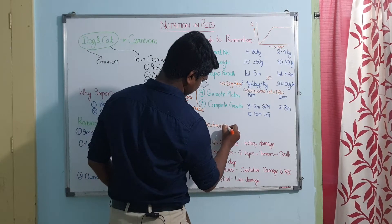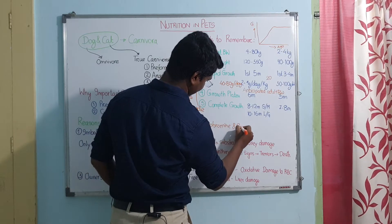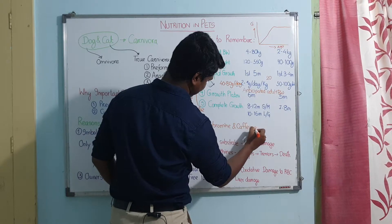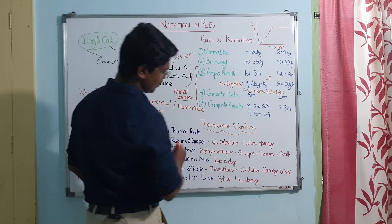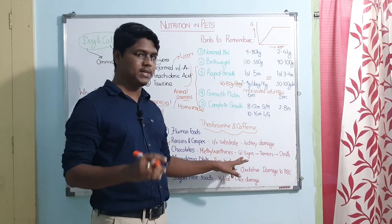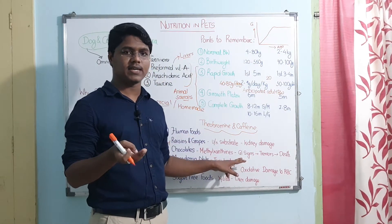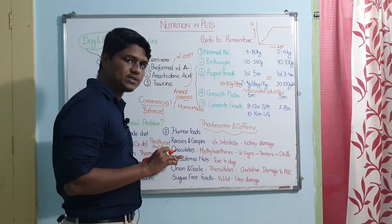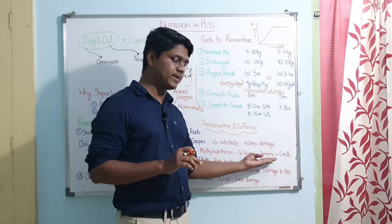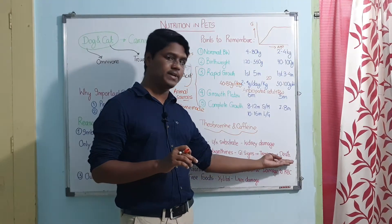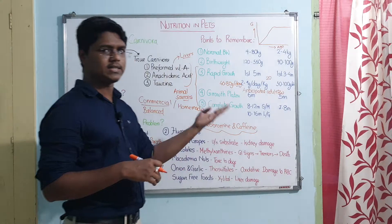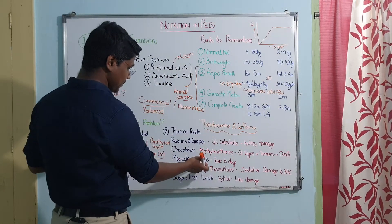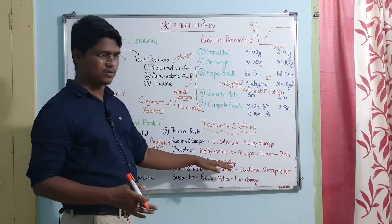Theobromine and caffeine are the methylxanthines present in chocolate. Initially there will be gastrointestinal signs like diarrhea or vomiting. If chocolate is not withdrawn, with time there will be tremors, then arrhythmia, then seizures, then death.